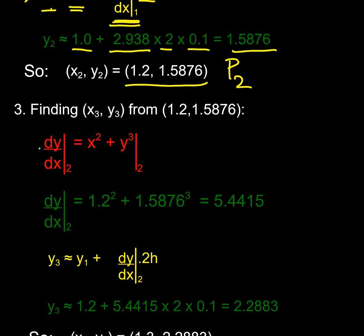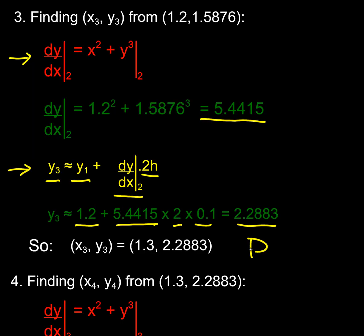I can do the same thing again to get to p3. I find the gradient at p2—that's my midpoint now, going to be my midpoint—so I've now got a gradient at p2 as being 5.4415. I want to find p3, so I need to find y3, and I find that by starting at y1 and using the gradient from y2 and going twice as far. So that's 1.2 is my y1, times the gradient 5.4415 times 2 times 0.1, so my p3 point is going to be (1.3, 2.2883), again higher than we got from the Euler calculation.